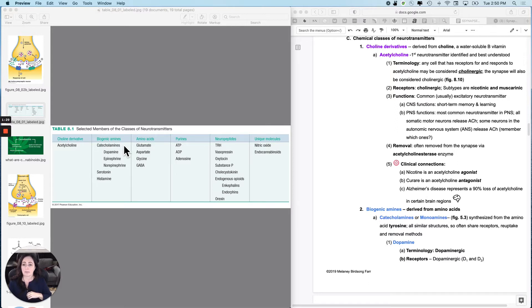And then the amino acids, these are straight amino acids. They could just as easily have been part of a protein, but they are actually used as a neurotransmitter. And then there are the purines.